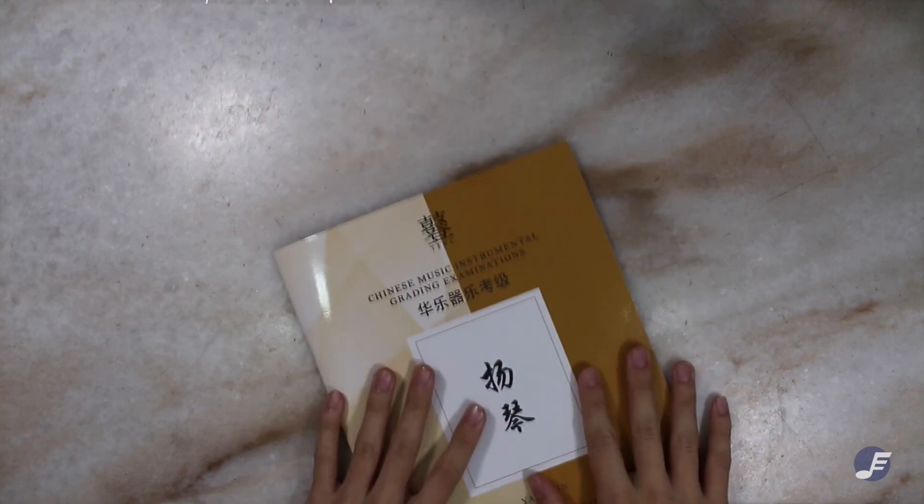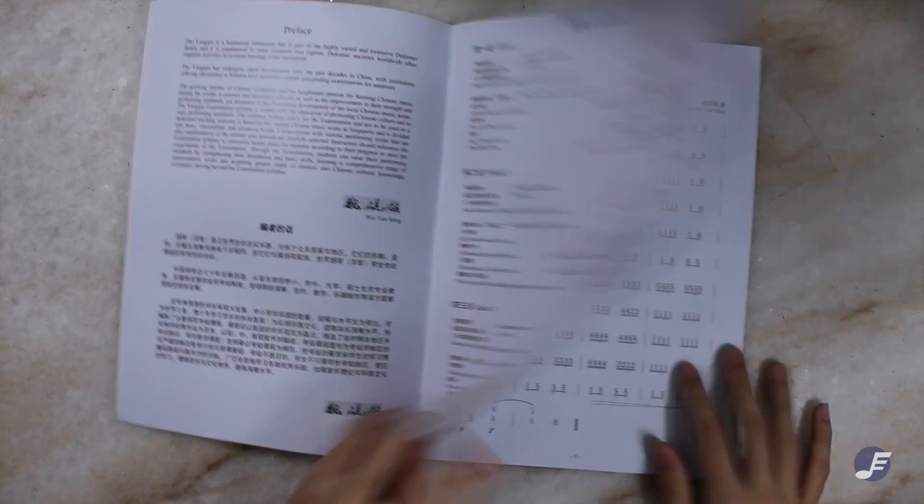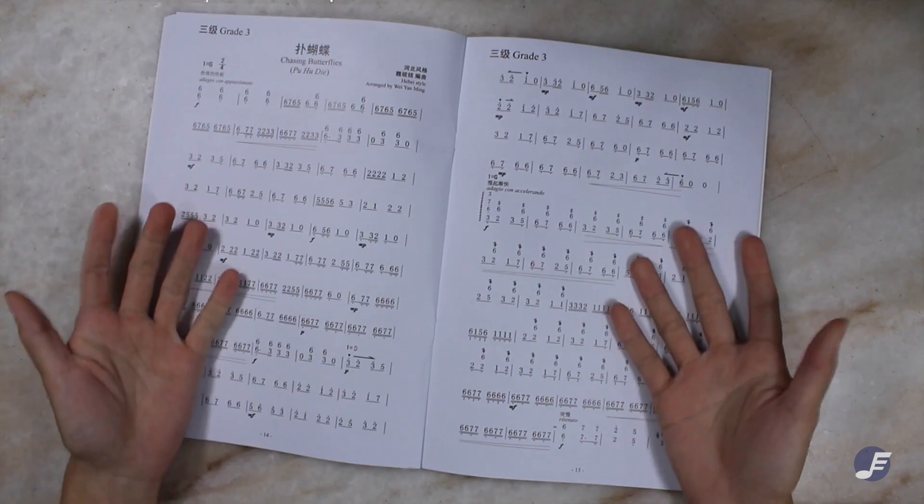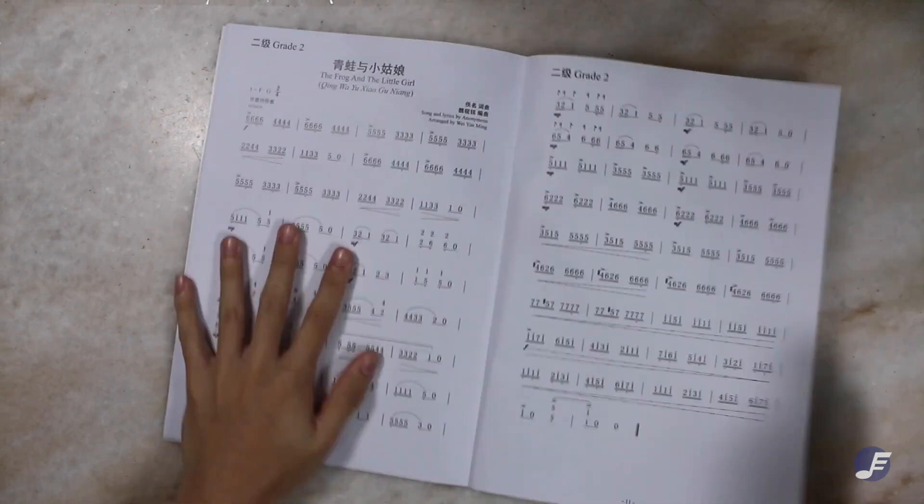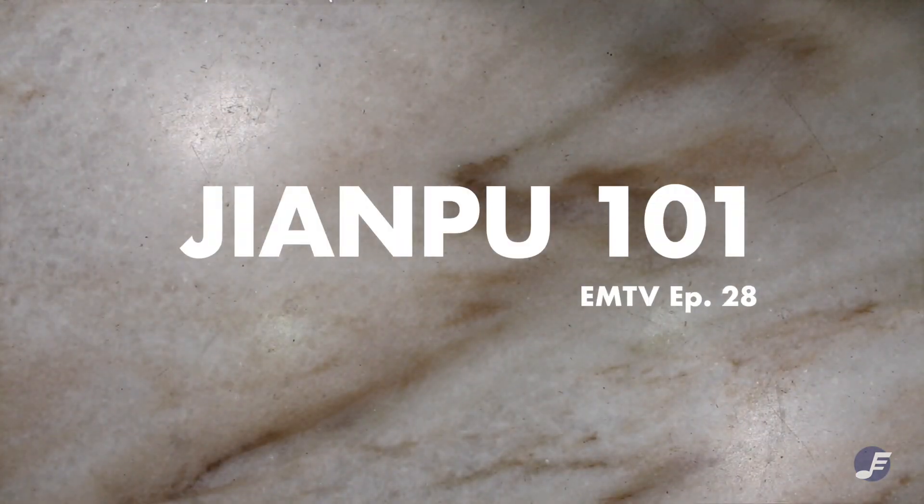Has this ever happened to you? You bought a new music book and they're all in numbers, and there's definitely not any instruction behind. Well, ladies and gentlemen, in this episode, we'll be giving you a brief explanation on jianpu.